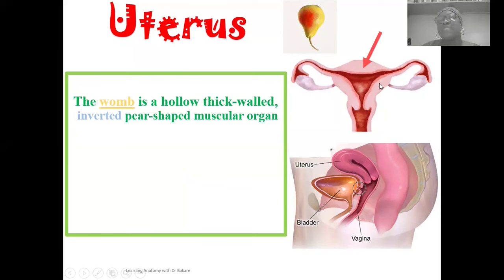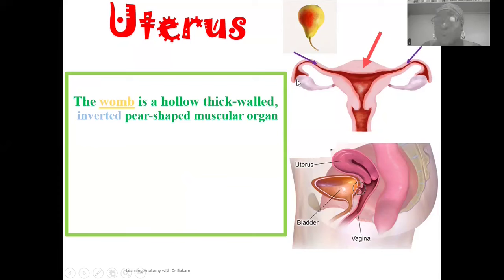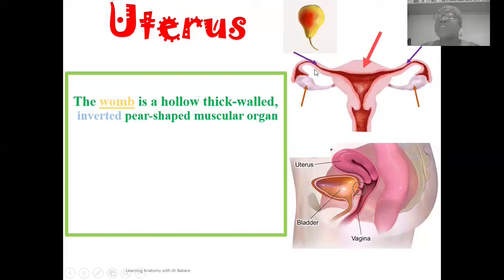At the lateral end of the uterus we have the emergence of the uterine tubes, highlighted in purple — two of them, one on each side. Further at the lateral region of the uterine tube we have the ovary, one on each side. Looking at these three structures — the ovary, the uterine tube, and the uterus — they are all located within the pelvic cavity because their functions are similar in respect to reproduction.